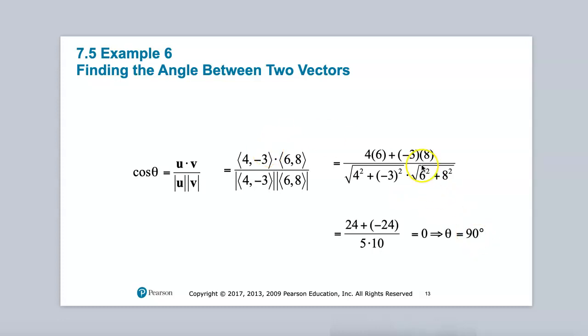In other words, if the dot product is equal to 0, then you have a right angle. Let me write that down. So if the dot product of two vectors is equal to 0, then you have a right angle between the two vectors. Another way of saying this is to say that the two vectors are orthogonal. If u dot v is equal to 0, then you have orthogonal vectors.